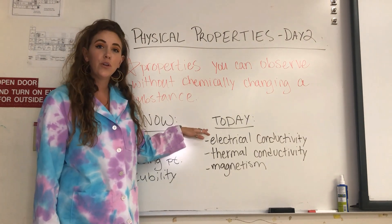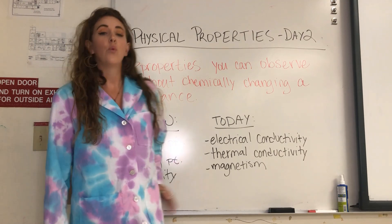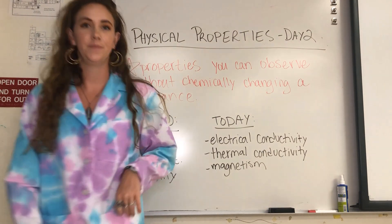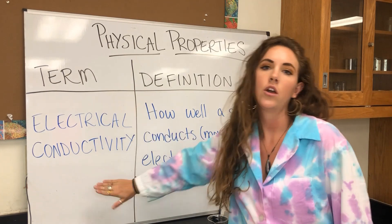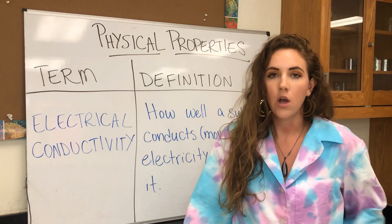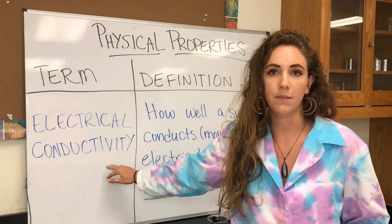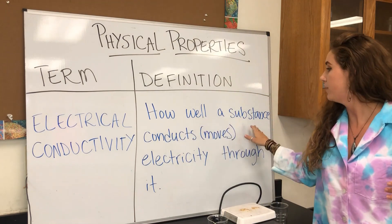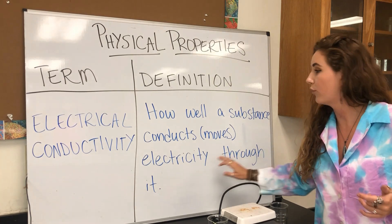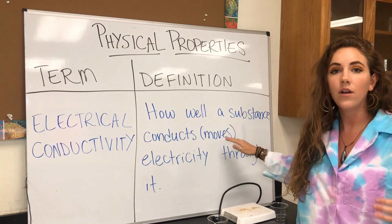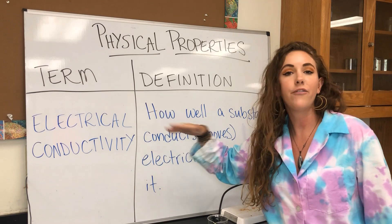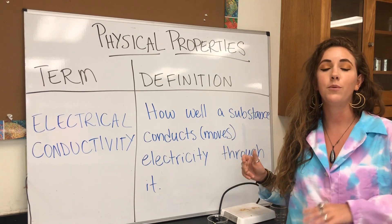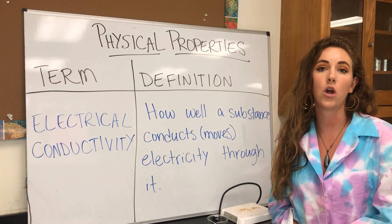Those three are going to be electrical conductivity, thermal conductivity, and magnetism. I'm going to have you get the definitions of these three terms and show you little demos about each one. Let's break down our first term: electrical conductivity. We already know that electrical sounds like electricity, but what does conductivity actually mean? Let's take a look at our definition: it is simply how well a substance conducts or moves electricity through it. If a substance is a good conductor of electricity, it can move electricity through it very well. Let's get this definition in your notes.